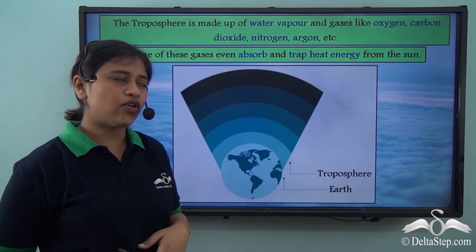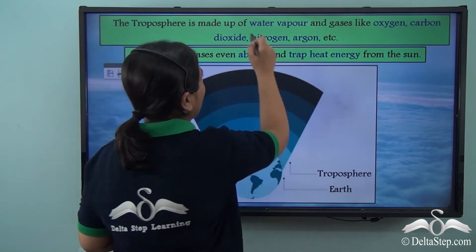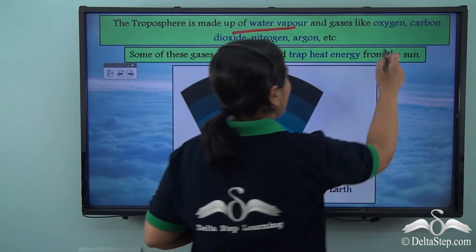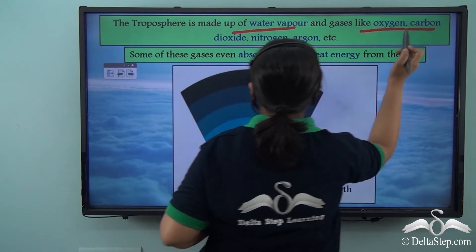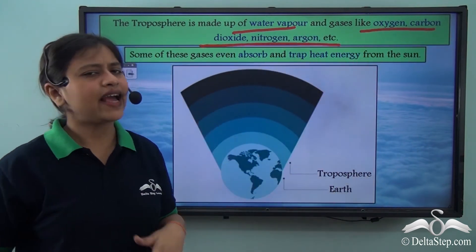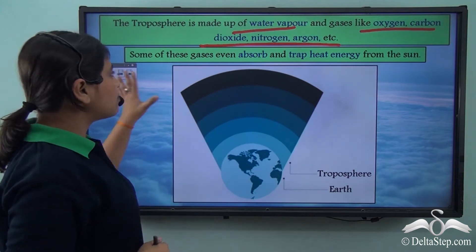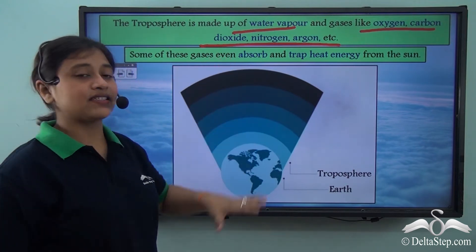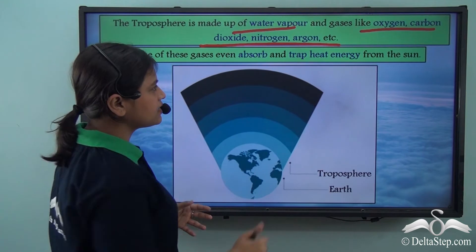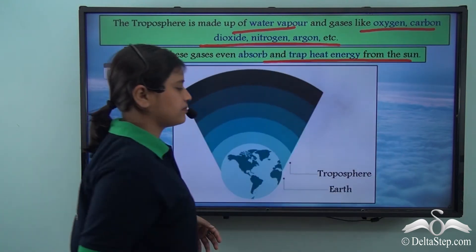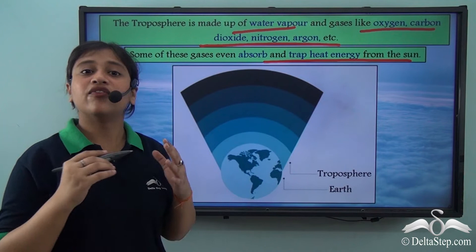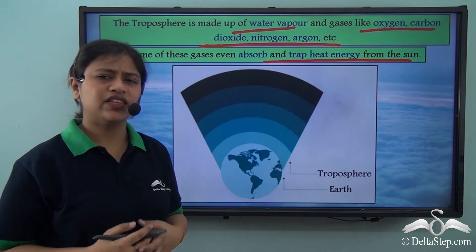In the troposphere, we have water vapour and gases like oxygen, carbon dioxide, nitrogen, argon, etc. Also, some of these gases absorb and trap heat from the sun.